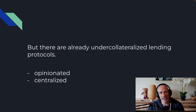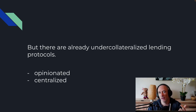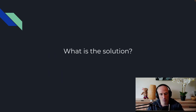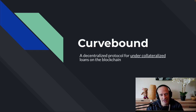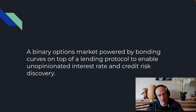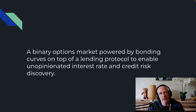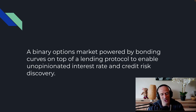So what do we see? We see over-collateralized loans and we see centralized opinionated authorities setting the interest rate themselves, assessing your credit risk. So what is the solution? The solution is CurveBound - a decentralized protocol for under-collateralized loans on the blockchain. So how do we do that? I was thinking about this for almost over a year, and I tinkered with it, played around with different languages - I implemented it in Solana, I implemented it in Solidity on Ethereum and other EVM-based chains.